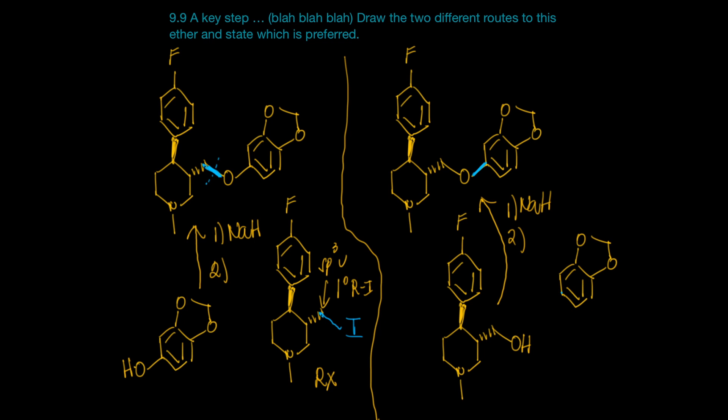And what leaving group do you want to have on this one? Let's go with iodine again. Change my pen to blue to add some drama, and we'll place our leaving group on here. So once again in step one, we're hopeful that the alcohol here will be deprotonated by the hydride, giving us the alkoxide, and the alkoxide will attack this carbon, kick off the iodine, and create this bond here. Looks good.